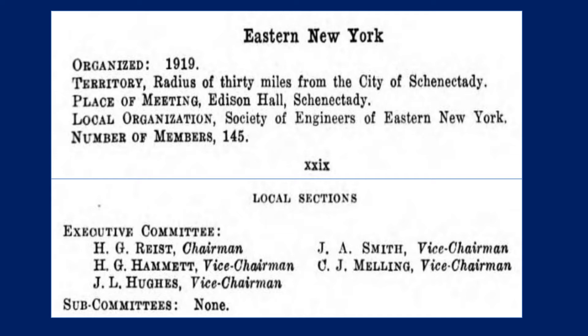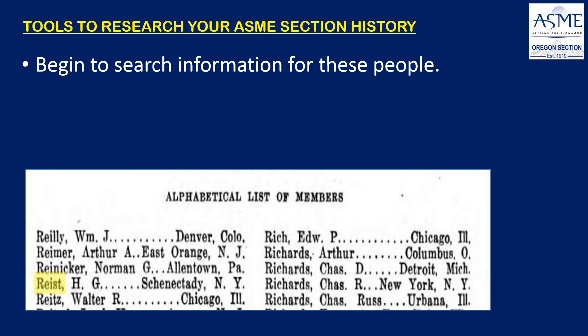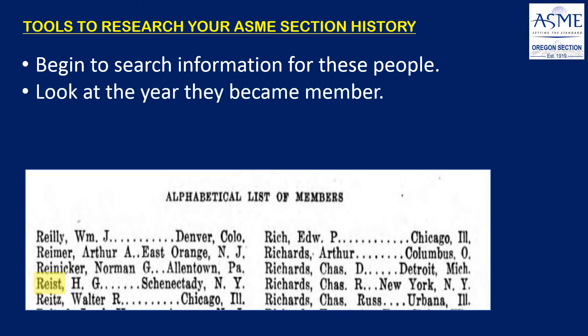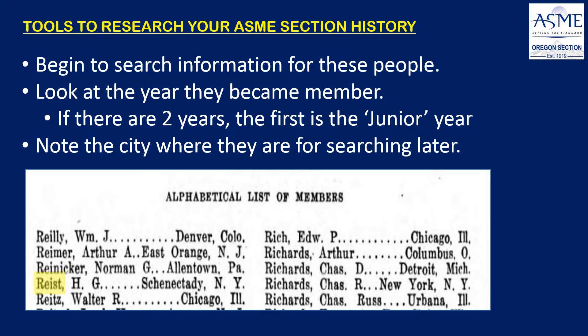There are other names here that will also be valuable for searching. Now you've got that first name, a city, and the year 1919 when events started to happen. I can also see that the yearbook includes an alphabetical list of member names, so I can confirm that he was actually a member and see the other members and what cities they lived in. Our goal is to find the year they became a member — sometimes they'll put down two years because people sometimes joined as a different grade, what they called a junior member. That was typically for early career people or those still in a college section. The city where they lived will also be useful for searching later.